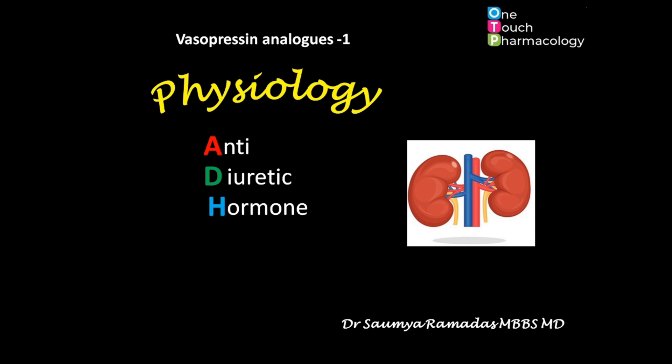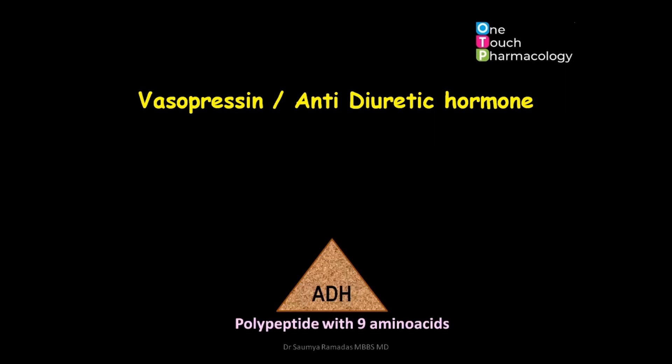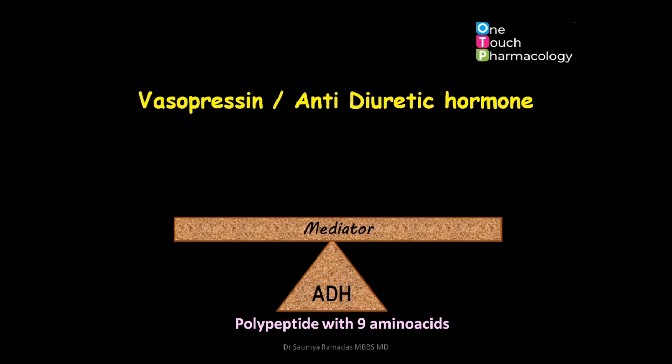This is the first part of a series on drugs that act on vasopressin receptors. Before diving into the pharmacological aspects, let's have a brief look at the physiology of antidiuretic hormone or vasopressin. Structurally, antidiuretic hormone or vasopressin is a polypeptide with nine amino acids.